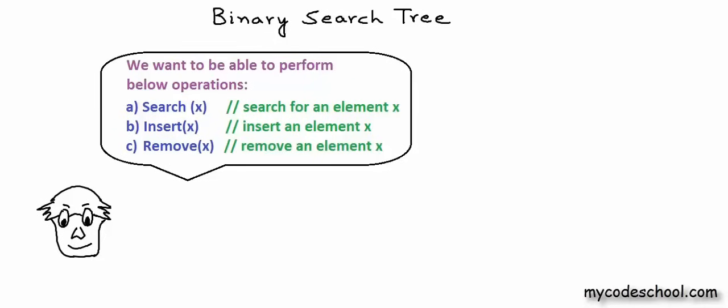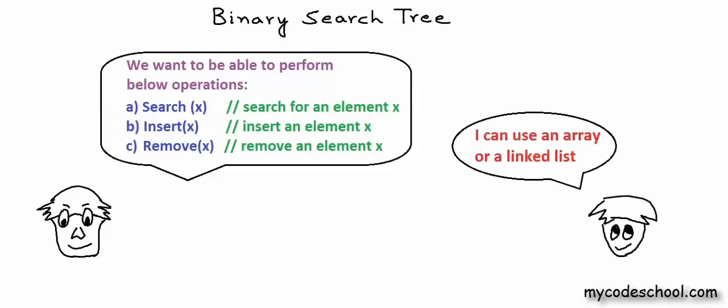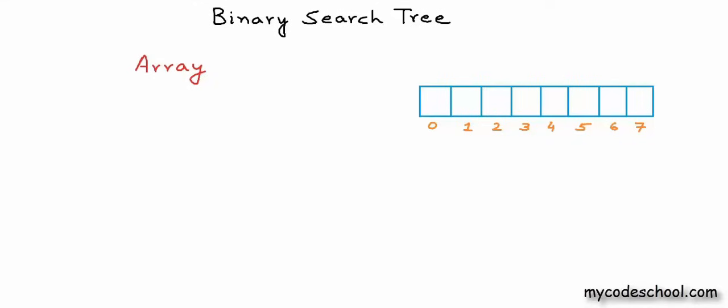What data structure will you use? You can use an array or a linked list. These are two well-known data structures in which we can store a collection. Let's first talk about arrays and for simplicity let's say we want to store integers. To store a modifiable list of integers, we can create a large enough array and store the records in some part of it, keeping the end of the list marked.